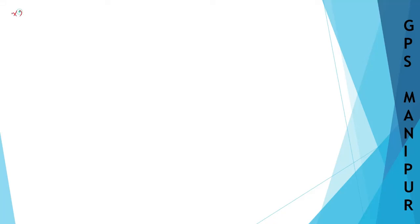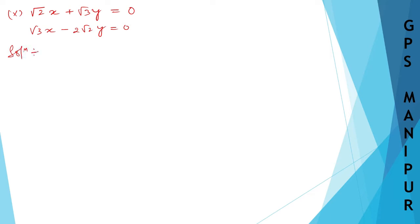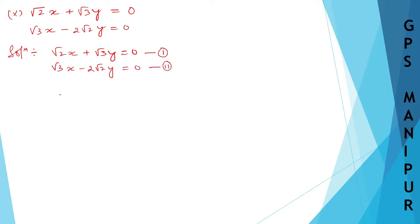Now we are doing exercise 4.2, question number 1, roman number 10. The question is: root 2x plus root 3y is equal to 0, and root 3x minus 2 root 2y is equal to 0. So root 2x plus root 3y equals 0 is equation number 1, and root 3x minus 2 root 2y equals 0 is equation number 2.